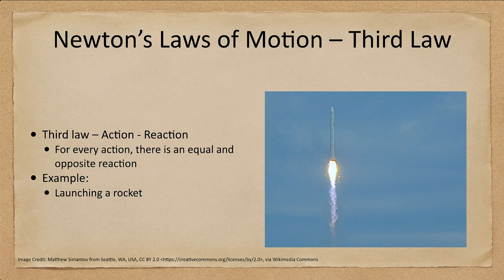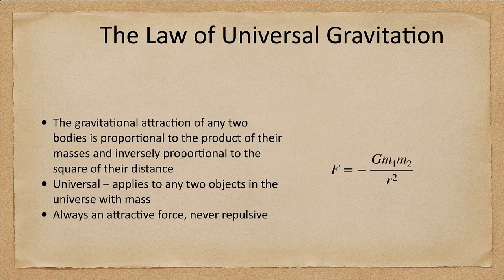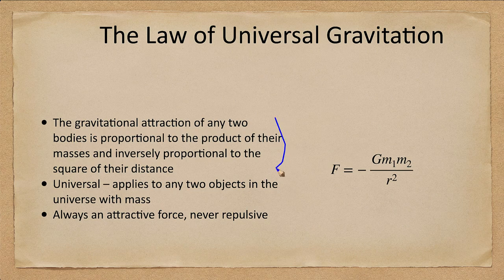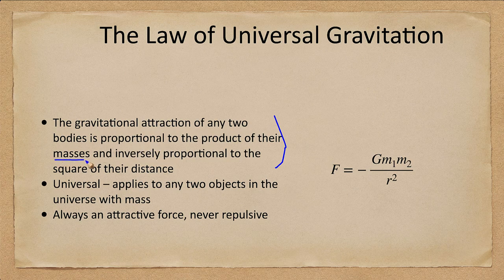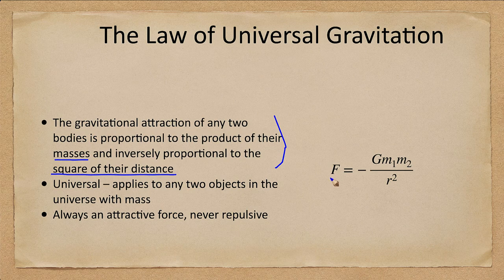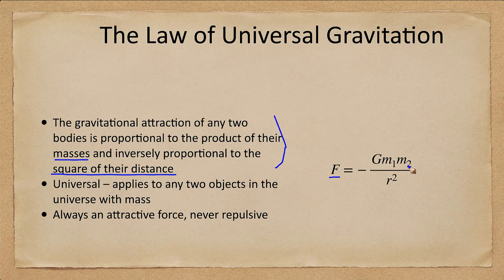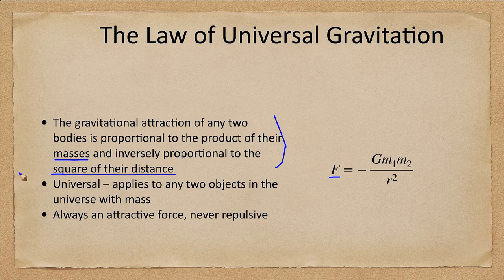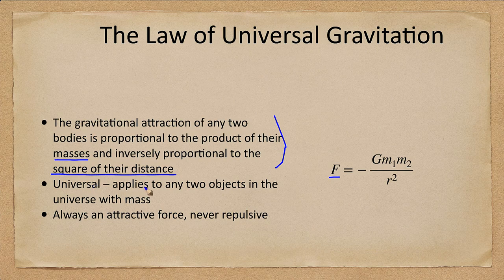Now the other thing we wanted to look at for Newton was his law of gravitation. His universal law of gravitation states that the gravitational attraction between any two bodies is proportional to the product of their masses and inversely proportional to the square of their distance. Let's write that as an equation: F equals negative G m1 m2, that's the product of the masses, divided by the square of the distance. G is the gravitational constant.